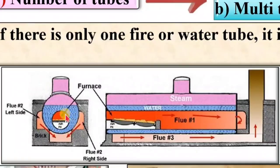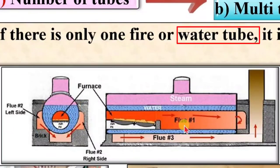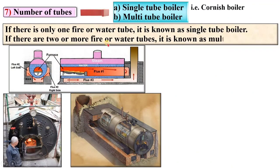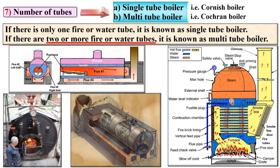Here you can see the side view and front view of the Cornish boiler — only one water tube is present, that's why it is called a single tube boiler. If there are two or more fire or water tubes, it is known as a multi-tube boiler. The example is the Cochran boiler — here you can see there are many tubes, so it is a multi-tube boiler.